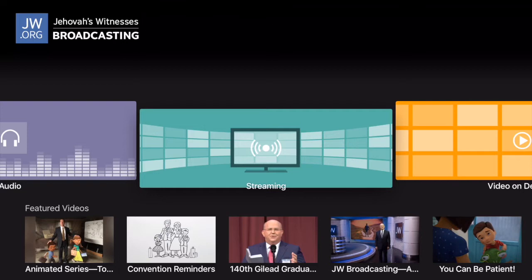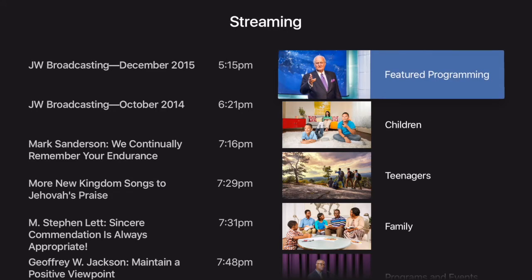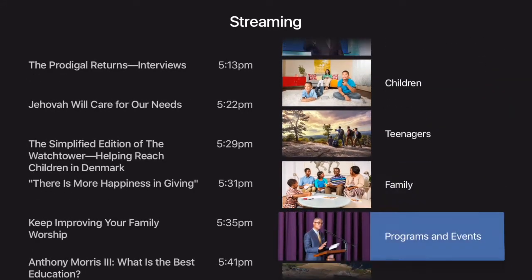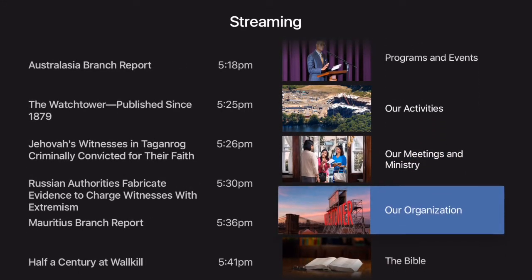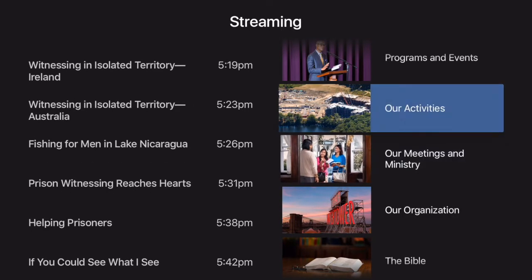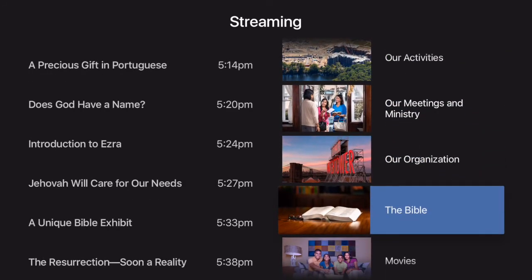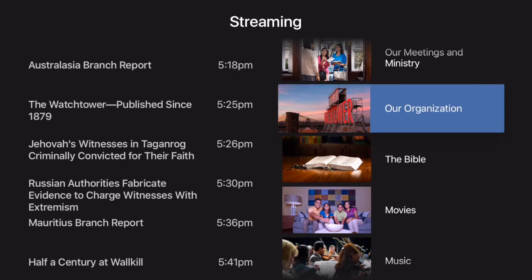The first feature we'll look at is the streaming feature. Streaming is basically watching live TV, so you don't even need to worry about finding wholesome programming — you can just go right into the streaming section of JW Broadcasting. On the right-hand side you'll see different channels made up of different programs. For example, you can see our Australia Branch Report, The Watchtower published since 1879, and so on. If we click on any one of these different channels, just like watching TV, you've got different channels.